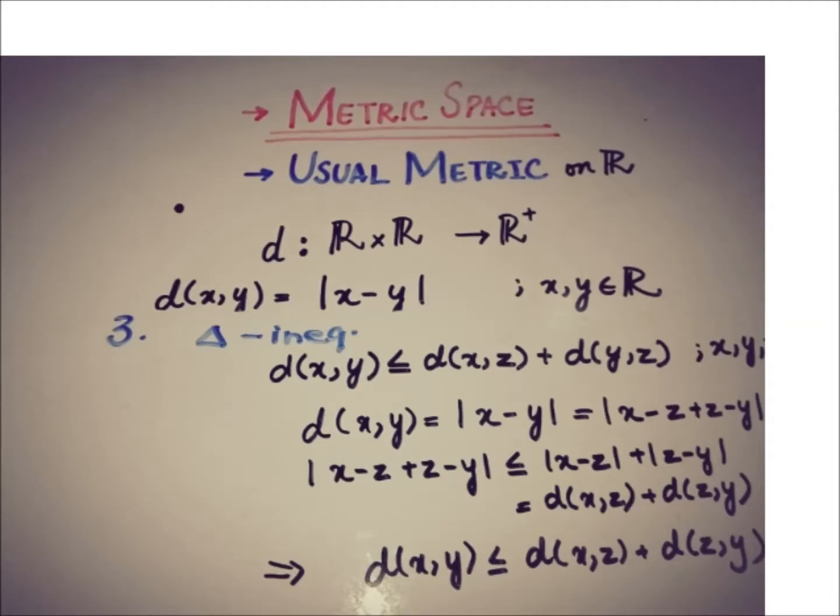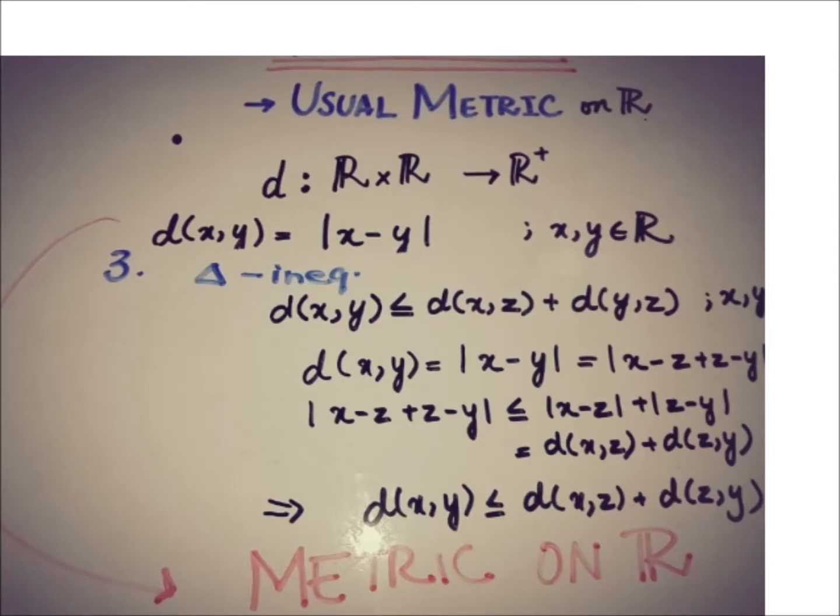So the third property is also proved now. So having verified all the three properties we can say that d is a metric and it is known as a usual metric.